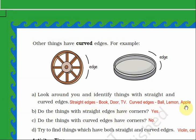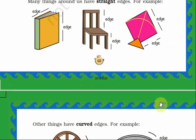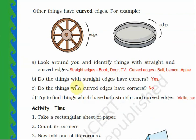Do the things with straight edges have corners? Yes, because the things which have straight edges have corners — for example, a book has straight edges and therefore has corners. Do the things with curved edges have corners? No, they do not have any corners.